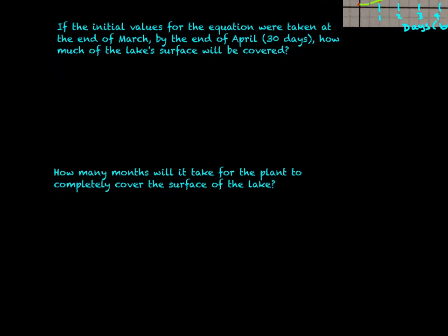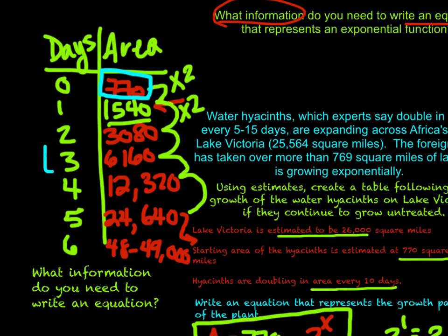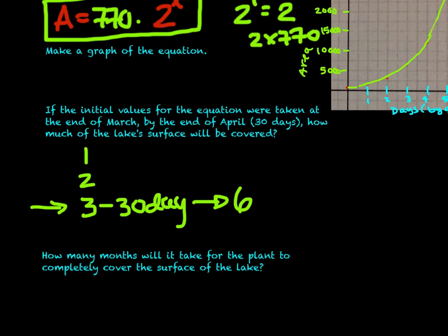So we can see that this growth is happening fairly quickly with this epidemic of proportions when it comes to Hyacinth. The initial values of the equation were taken at the end of March. By the end of April, 30 days later, how much of the surface of the lake will be covered? So 30 days later, let's think about our table that we had. So we're looking not at the 1 mark or the 2 mark, we're looking at the 3 mark. That's our 30-day point. So we need to look at our table. So let's move up to our table where we have that. And that 30-day mark, we have 6,160 square miles covered by the water hyacinths. So we have 6,160 square miles covering the lake.